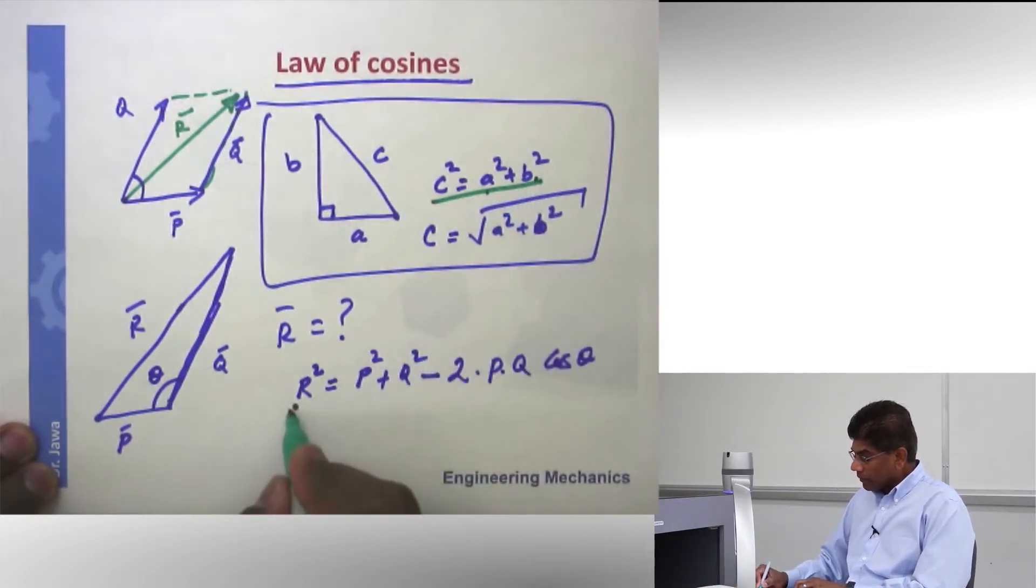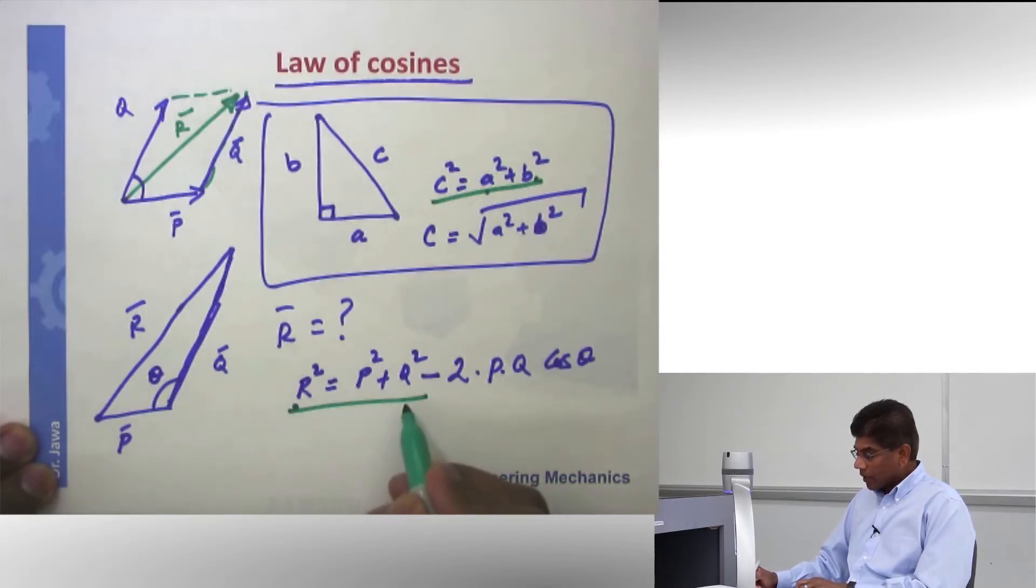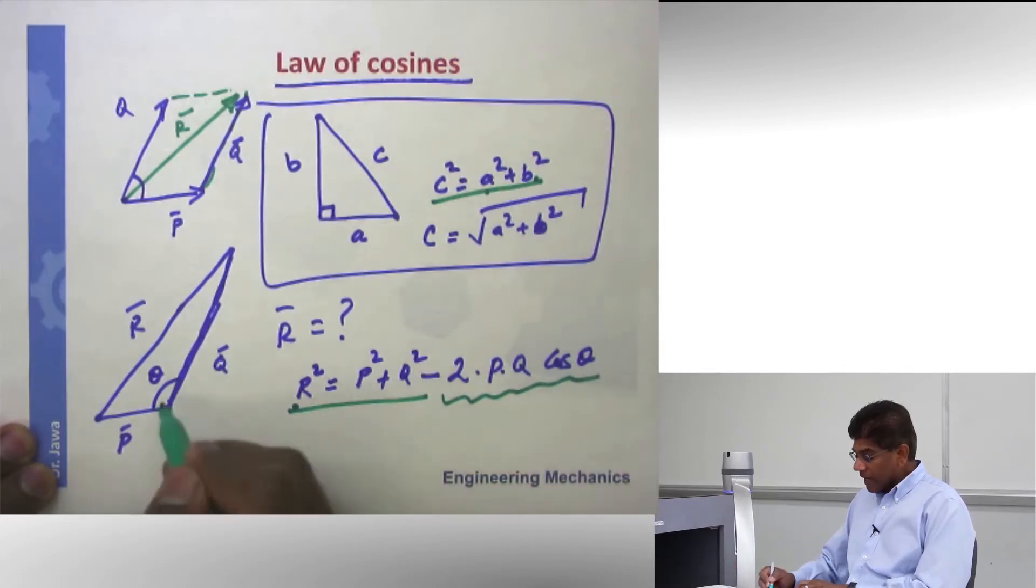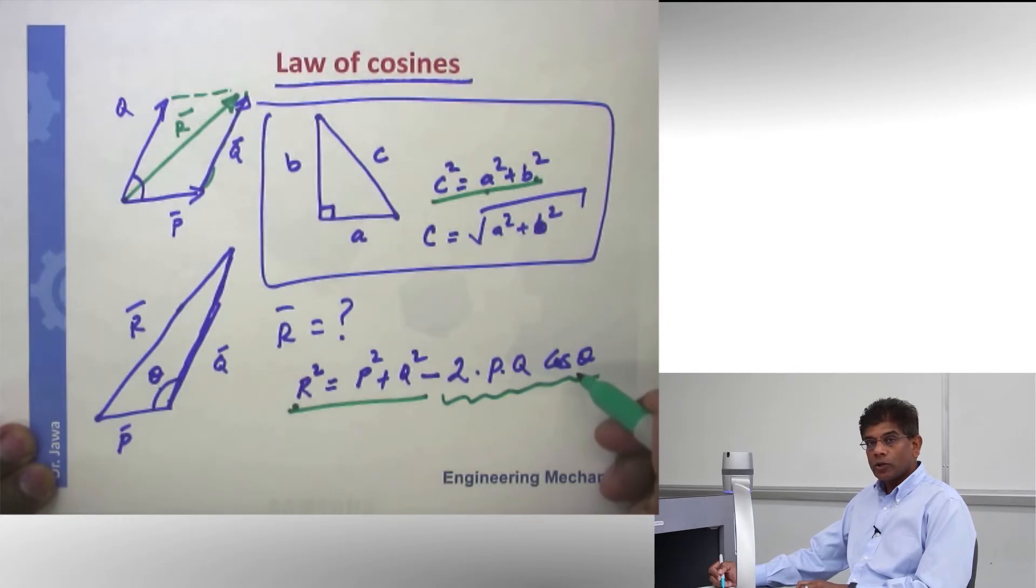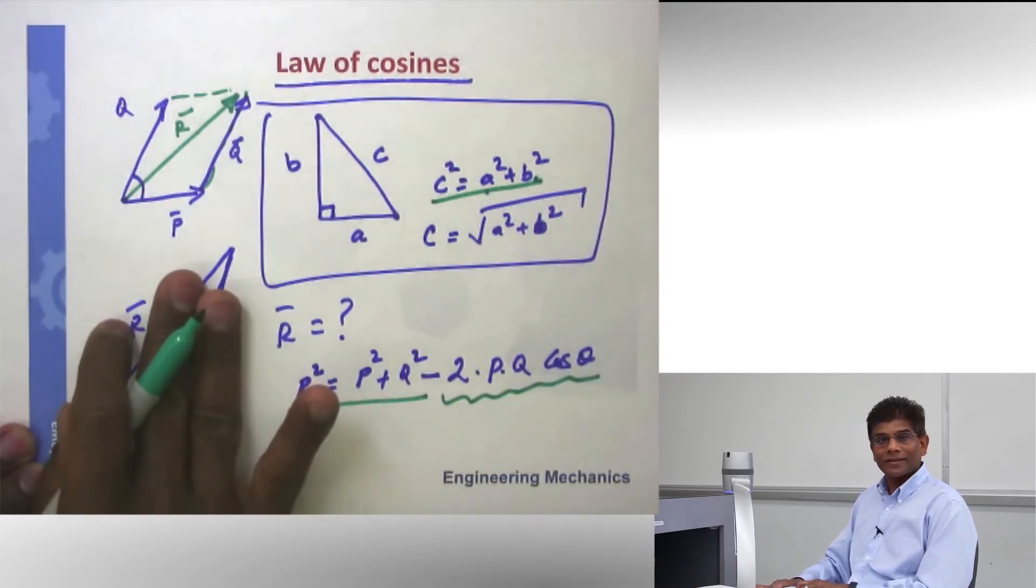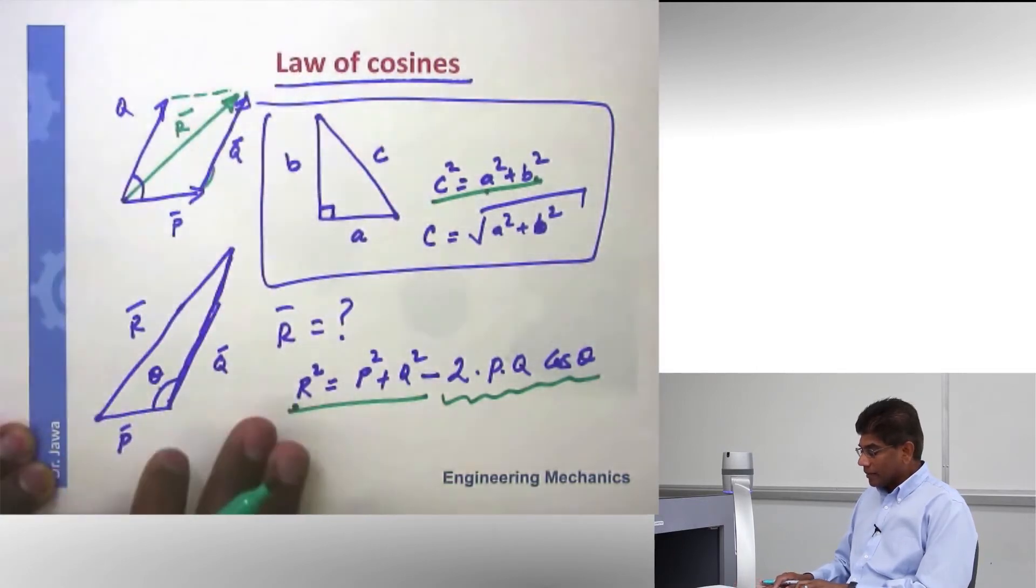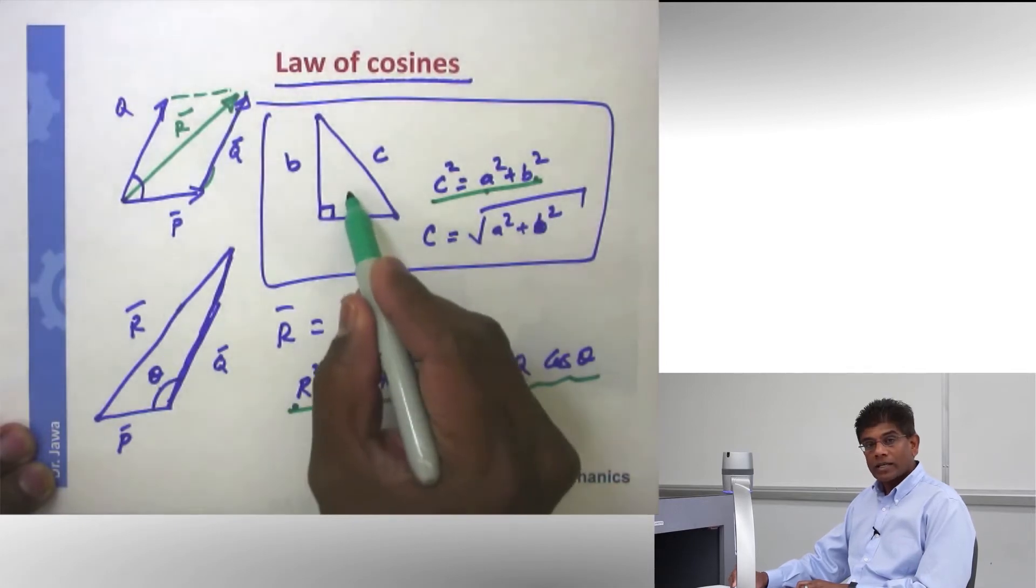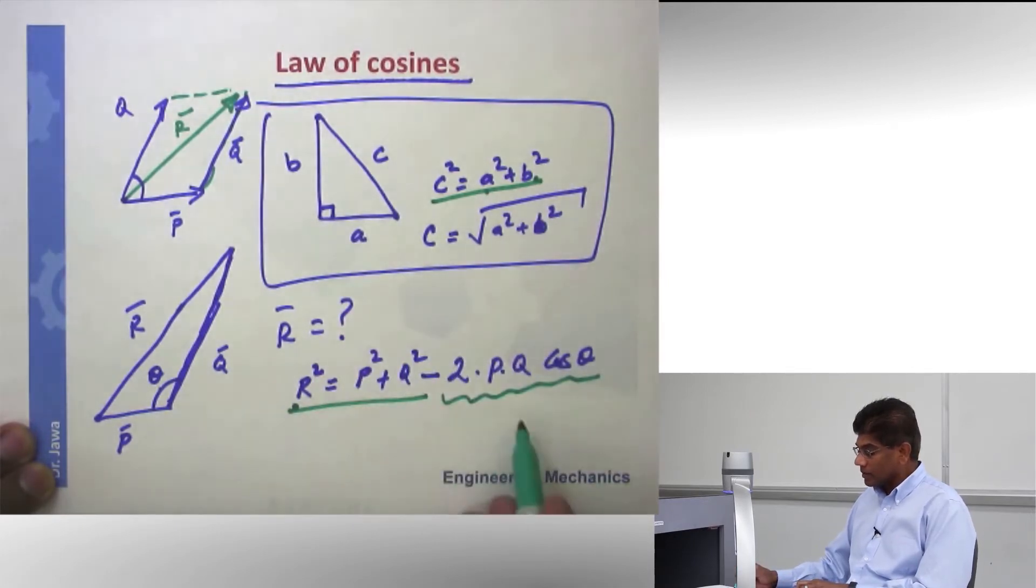A squared plus B squared, we have instead P squared plus Q squared. So it's similar to Pythagorean, but then we have another term here involving the sides and the angle. Now, if this angle happens to be 90 degrees, you know cosine 90 is zero. This term drops out. It becomes right triangle. So law of cosine is more generic and you can imagine Pythagorean theorem as a special case of this.